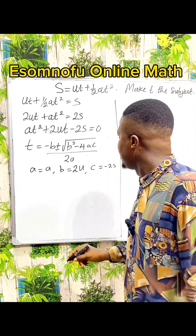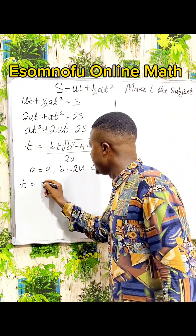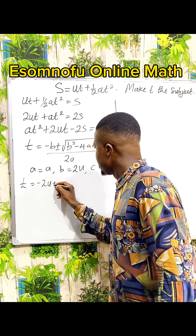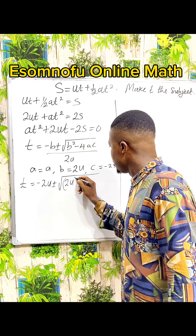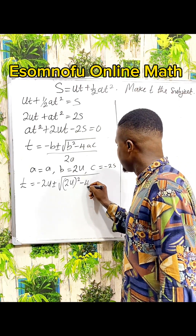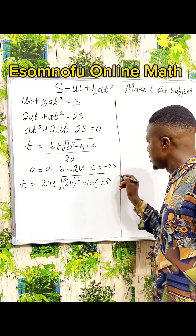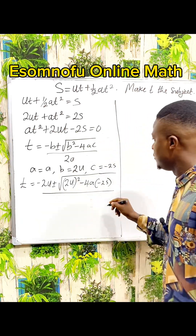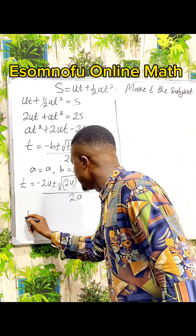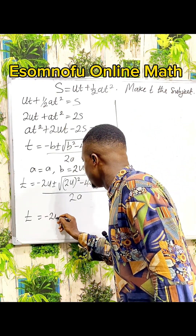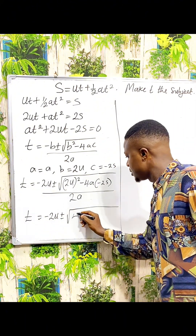From here, we substitute into the formula. T becomes minus B — our B is 2U — so we have minus 2U, plus or minus the square root of B squared, which is 2U all squared, minus 4AC. A is a and C is minus 2S. Everything over 2A. So T equals minus 2U plus or minus the square root of 4U squared...